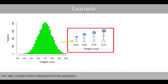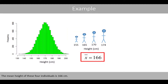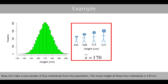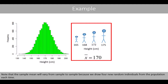Let's take a sample of four individuals from the population. The mean height of these four individuals is 166 centimeters. Now, let's take a new sample of four individuals from the population. The mean height of these four individuals is 170 centimeters. Note that the sample mean will vary from sample to sample because we draw four new random individuals from the population each time.